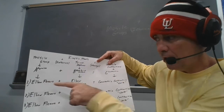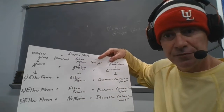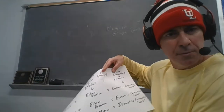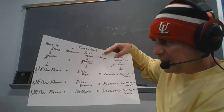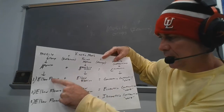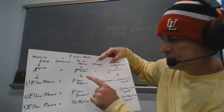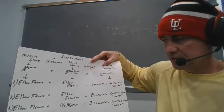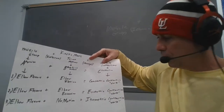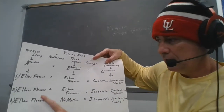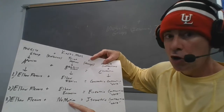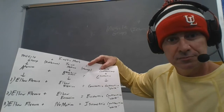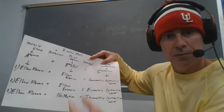You can insert any muscle group: hip flexors influence hip flexion through concentric contraction; hip flexors influence hip extension through eccentric contraction; hip flexors influence no hip motion through isometric contraction. You could insert any group of muscles.